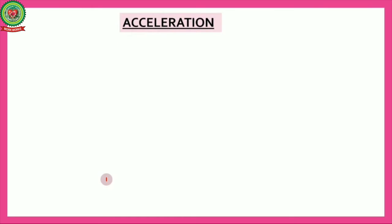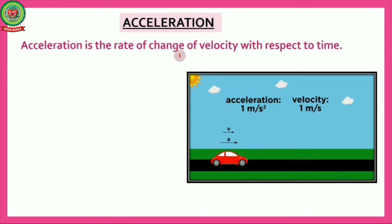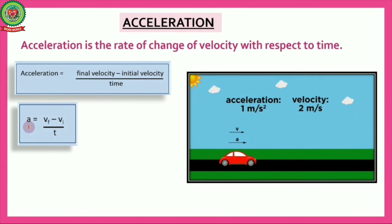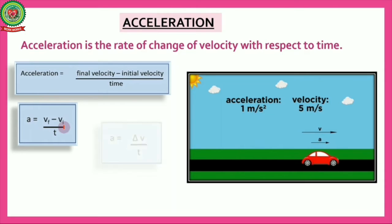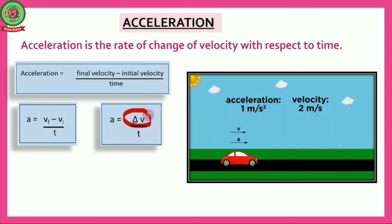Acceleration is the rate of change of velocity with respect to time. Therefore, acceleration is equal to final velocity minus initial velocity divided by time, or a = (vf - vi) / t, where vf is the final velocity and vi is the initial velocity. We can also write it as a = Δv / t, where Δv means change in velocity.